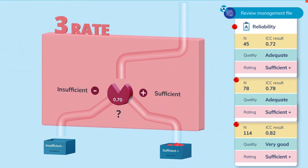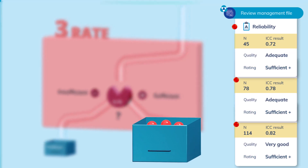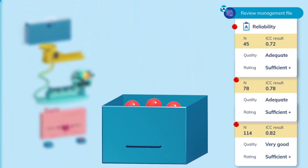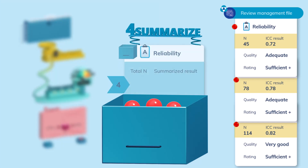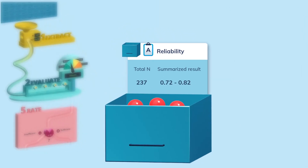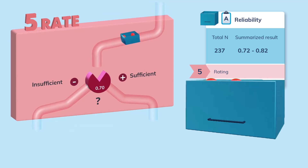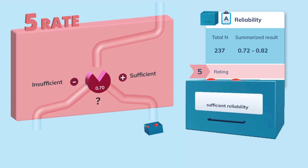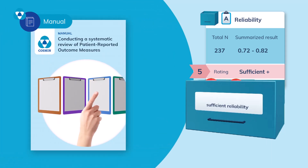In the first 3 stations, we looked at the individual studies. In stations 4 to 6, we use this information to make a conclusion on the reliability of PROM A. In the fourth station, we combine all study results into a summarized result. In the fifth station, you rate the summarized result with the same criteria for good measurement properties. Our summarized result for reliability of PROM A is sufficient and gets a plus. If you have inconsistent results, see the manual.